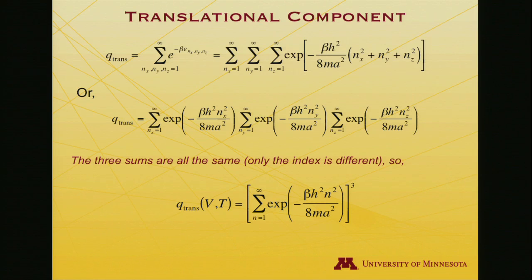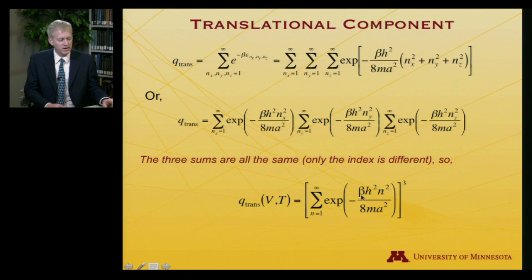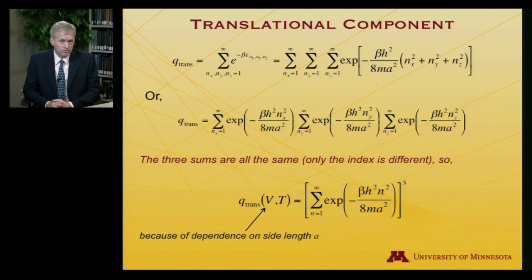Since I have a sum appearing in the argument of my exponential, I can convert that into a product of exponentials. This is the beauty of exponentials—you keep transforming between sums and products. Here is a sum over the quantum number in the x direction, summing over the quantum number in the y direction, and summing over the quantum number in the z direction. The form of all these arguments of the exponentials is the same, it just involves a different quantum number. Since only the index is different, each one of those sums is identical. So the translational partition function is the cube of this sum.